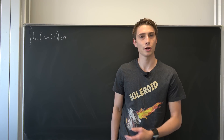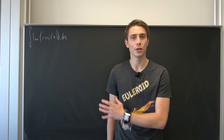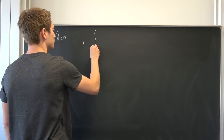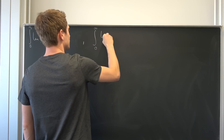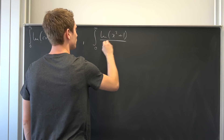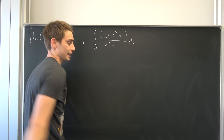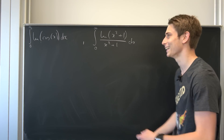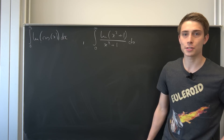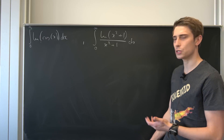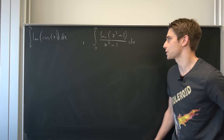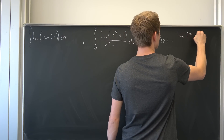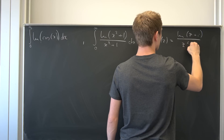At the moment I would like to take a look at something completely different, and maybe you can already see where this new integral comes from. So let's take a look at the integral from zero to infinity of the natural log of (x² + 1) over (x² + 1) dx. We want to solve this with complex analysis, so we have to introduce a proper complex function f(z), which is going to be the natural log of (z + i) over (z² + 1).